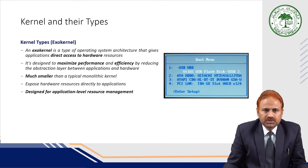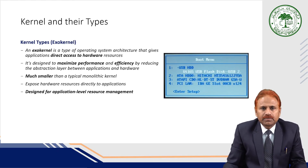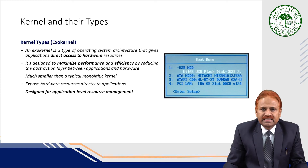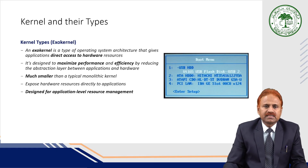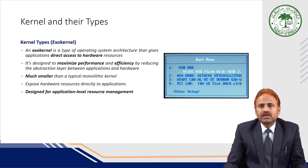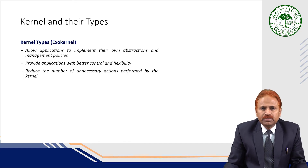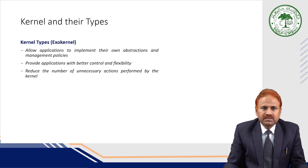The last type of kernel discussed is the exo kernel. An exo kernel is a type of operating system architecture that gives applications direct access to hardware resources. It is designed to maximize performance and efficiency by reducing the abstraction layer between applications and hardware. It is much smaller than a typical monolithic kernel, exposes hardware resources directly to applications, and is designed for application-level resource management. Exo kernels allow applications to implement their own abstraction and management policies, provide better control and flexibility, and reduce the number of unnecessary actions performed by the kernel.